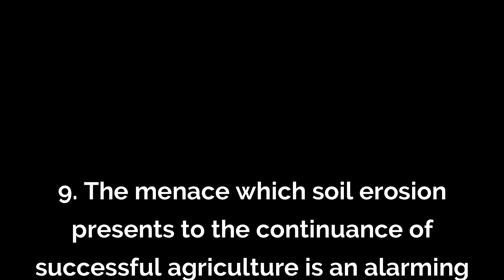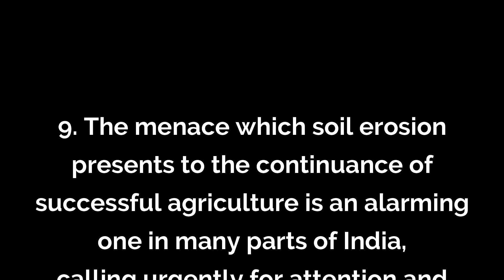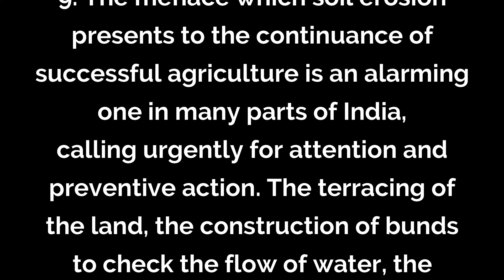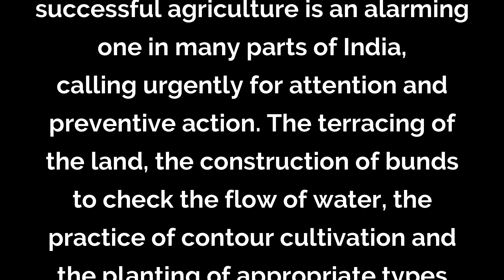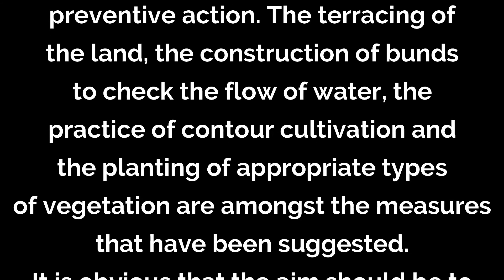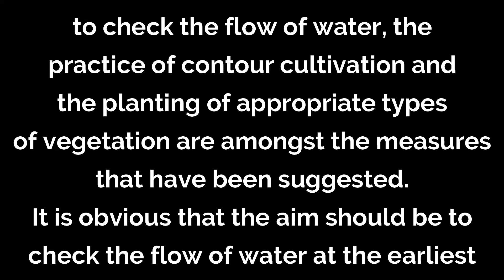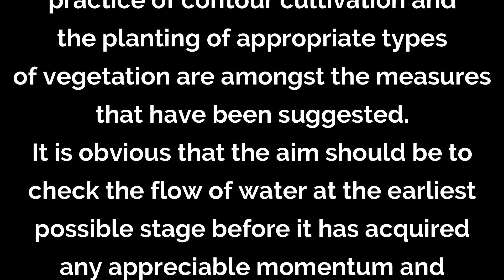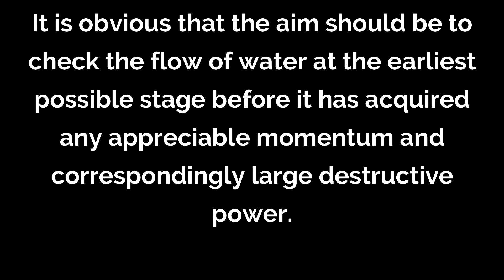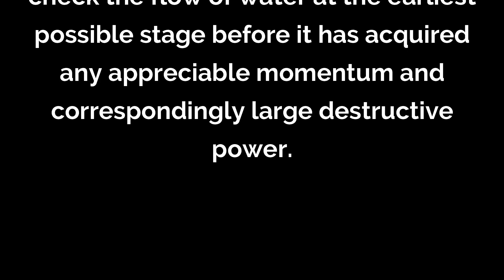The menace which soil erosion presents to the continuity of successful agriculture is an alarming one in many parts of India, calling urgently for attention and preventive action. The terracing of the land, the construction of bunds to check the flow of water, the practice of contour cultivation, and the planting of appropriate types of vegetation are amongst the measures that have been suggested. It is obvious that the aim should be to check the flow of water at the earliest possible stage before it has acquired any appreciable momentum and correspondingly large destructive power.